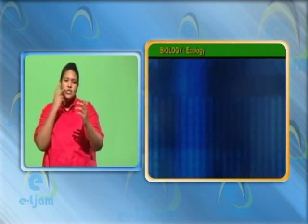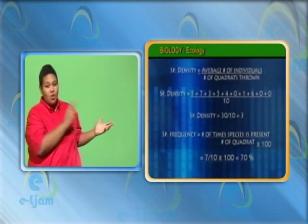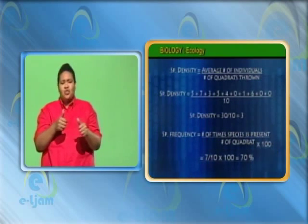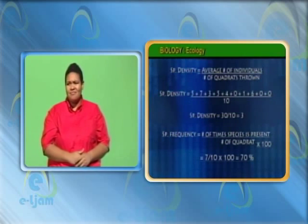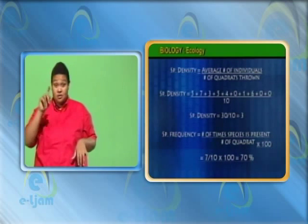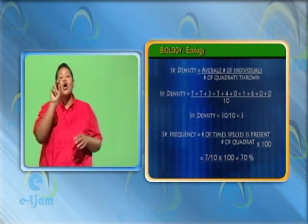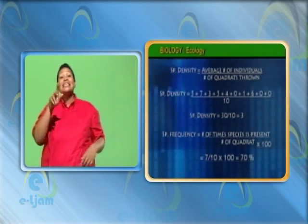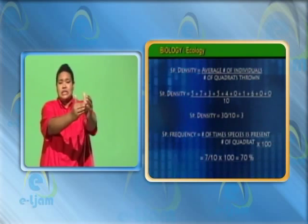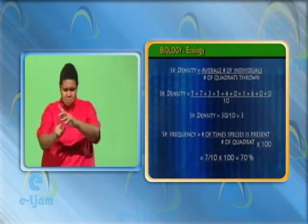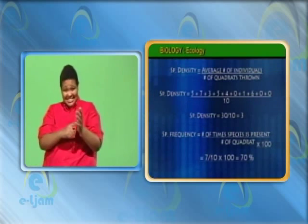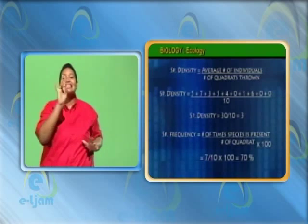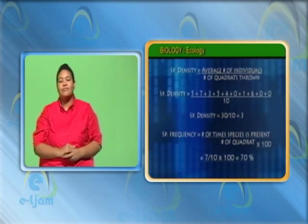Let us see how. Look at the table on the screen. Species density is obtained by averaging the number of individuals of a species in each randomly thrown quadrat in a given area. This example uses a quadrat size of one meter squared. In 10 throws, a total of 30 plants were counted. The average number of plants would be 30 divided by the 10 throws, so the species density would be 3. The species frequency, however, would be the number of times the species is present in the total number of throws. From the sample, the species was present in 7 out of 10 quadrats thrown randomly. The species frequency is therefore 7 out of 10 multiplied by 100, equaling 70%.